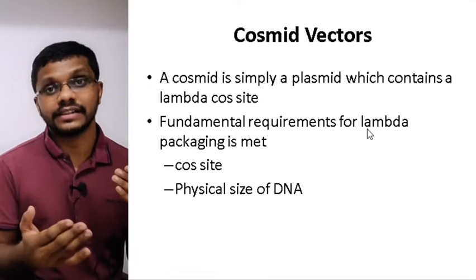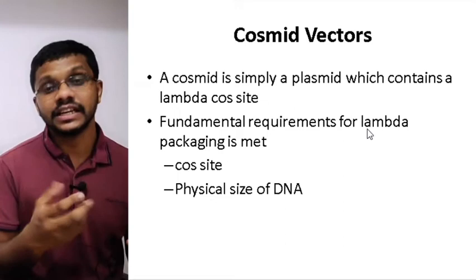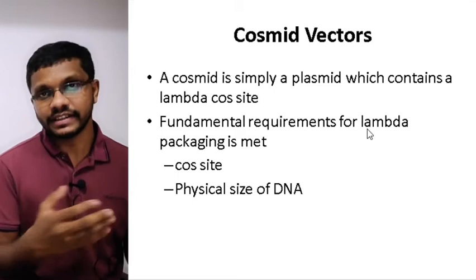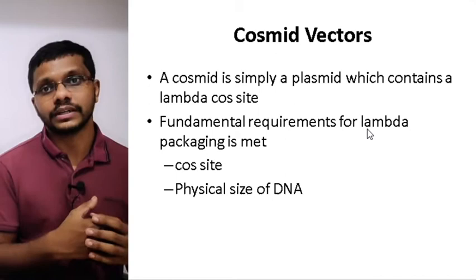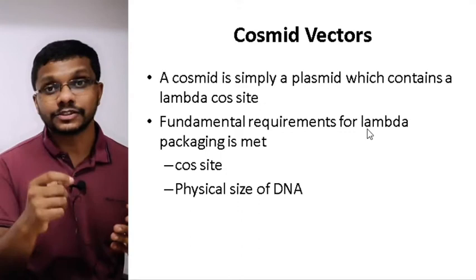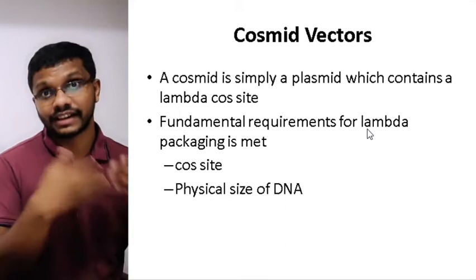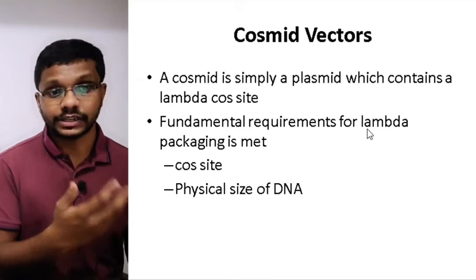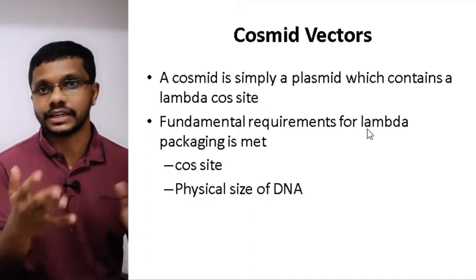Cosmid vectors satisfy the fundamental needs for in vitro packaging by the lambda phage. In the test tubes we can actually pack the lambda DNA, or any DNA which has the cos site and a specific length, which is an efficient method of gene transfer. The advantage of the cosmid is that it doesn't have any other regions from the lambda phage — only the cos site, which helps us pack the DNA into the lambda phage in the test tube.